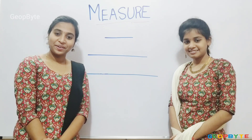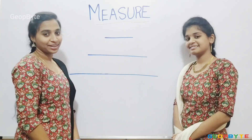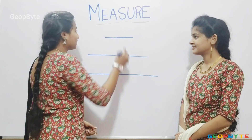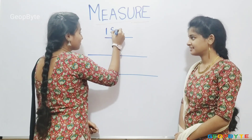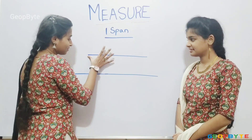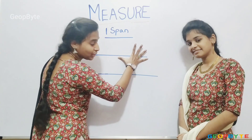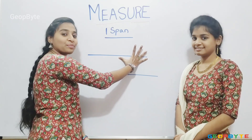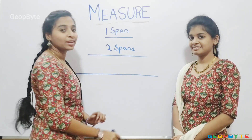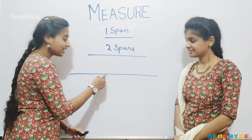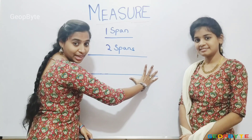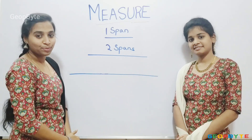Hey kids, now let us measure this line. One, two, three. This line is three spans of my hand. This line is one span of my hand. Now, let us measure this line. One, two. This line is two spans of my hand. Now, let us measure this line. One, two, three. This line is three spans of my hand.